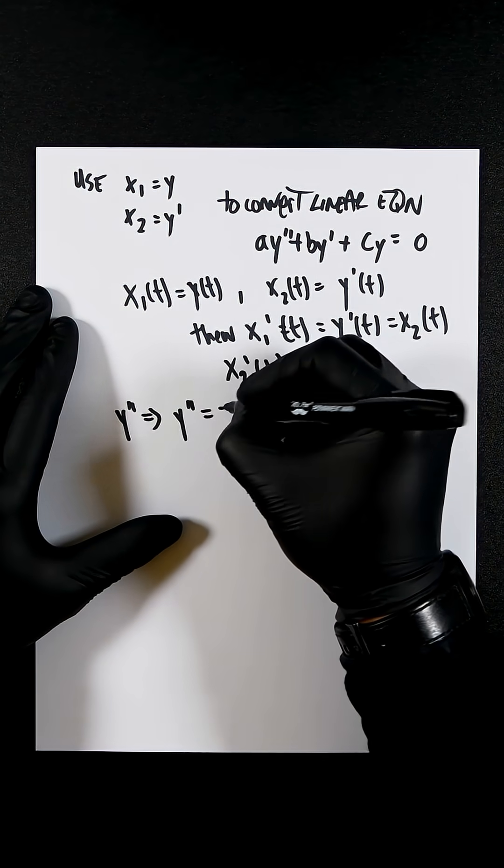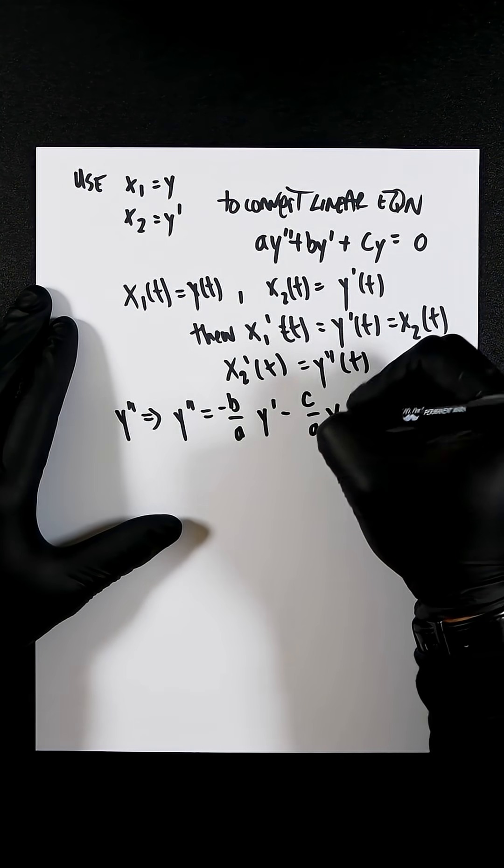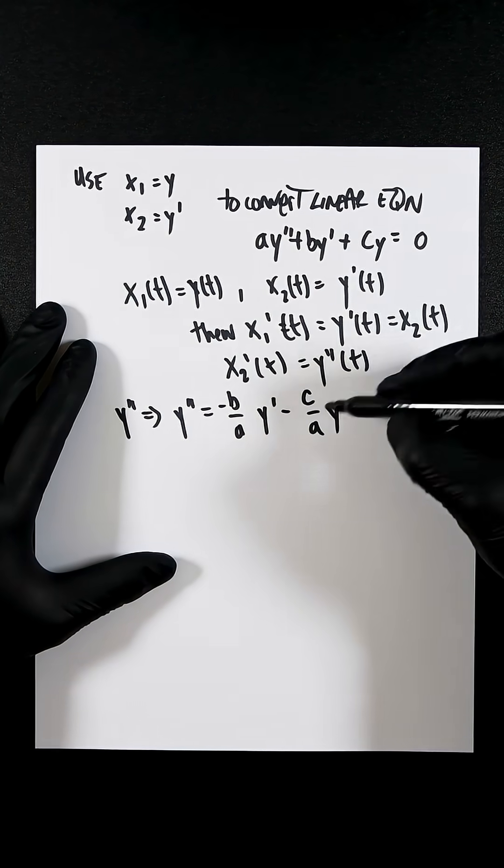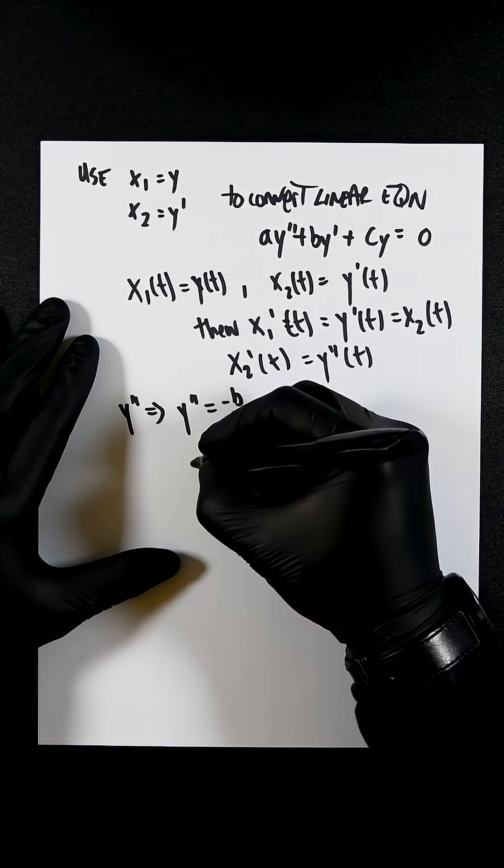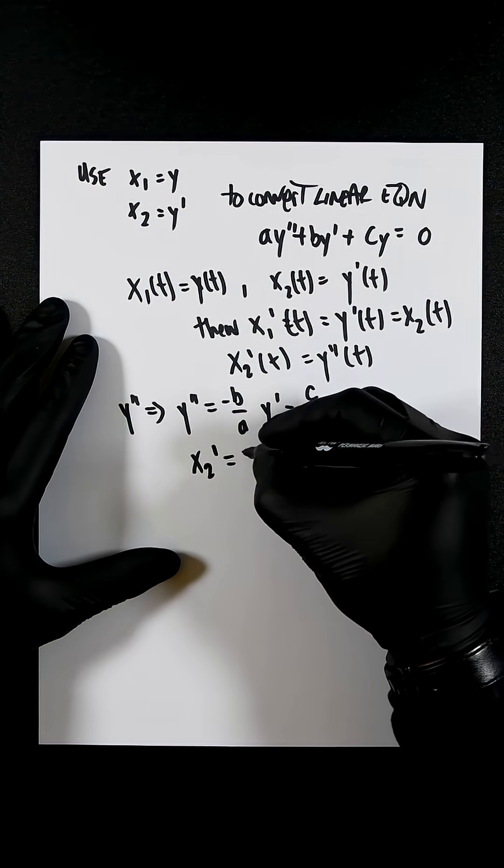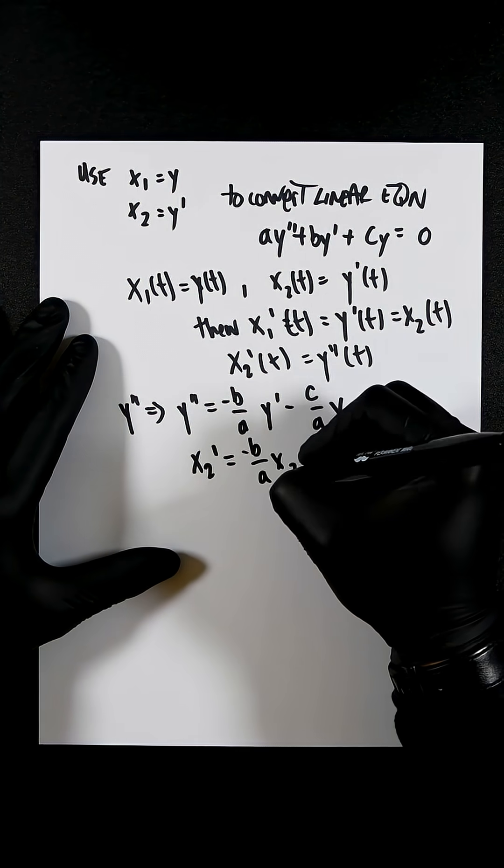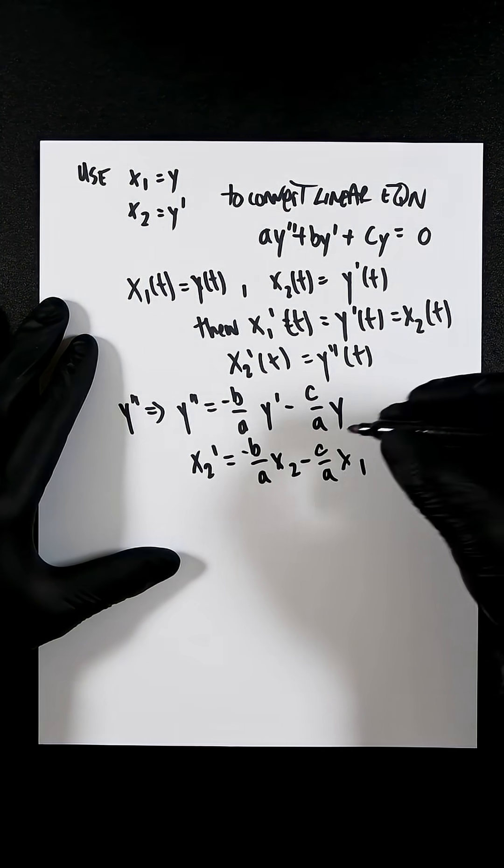You're going to get y dash dash equals minus b over a y dash minus c over a y. And then we can now substitute all this hard work that we've done up here. So you're going to get x2 dash equals minus b over a x2 minus c over a x1.